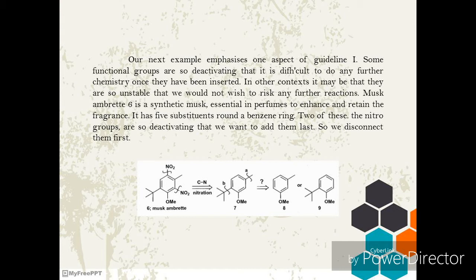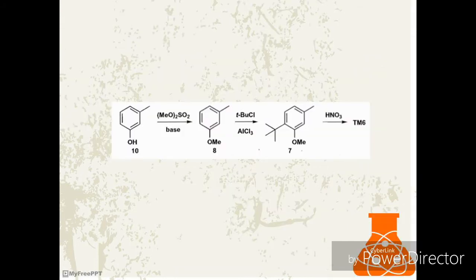Musk Ambrette 6 is a synthetic musk essential in perfumes to enhance and retain the fragrance. It has 5 substituents around a benzene ring. Two of these, the nitro groups, are so deactivating that we want to add them last. So we disconnect them.